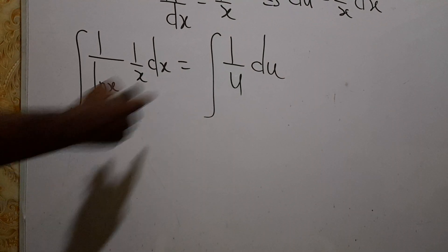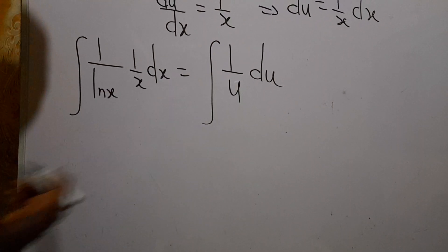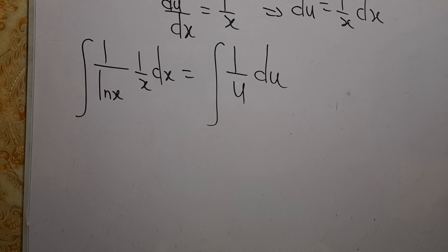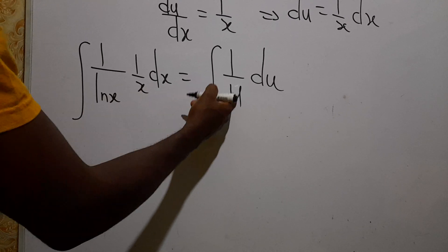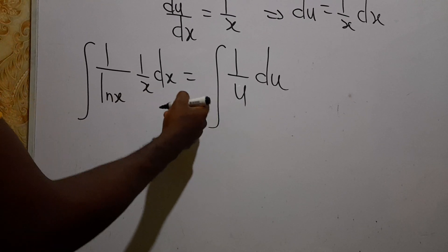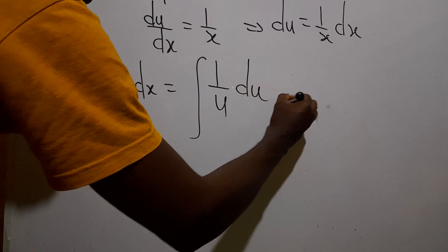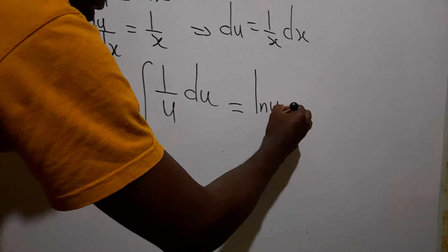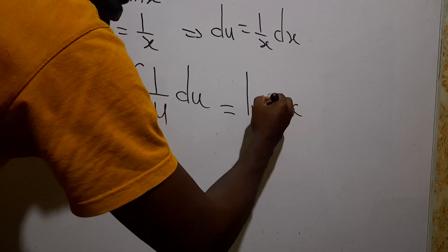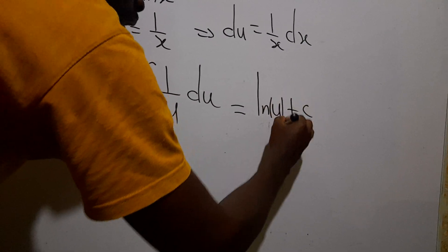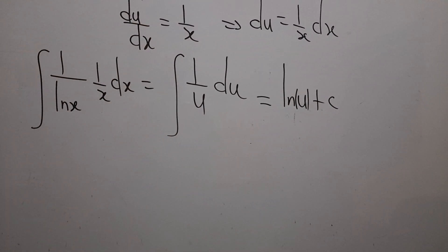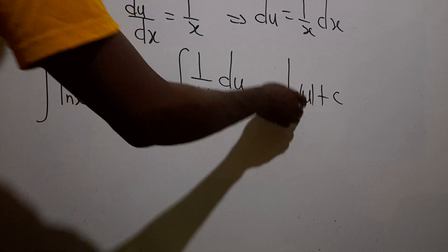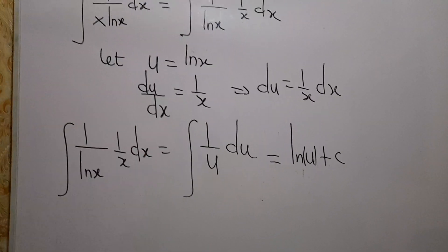The integral of 1 over u is simply ln|u| — remember the absolute value. So the integral evaluates to ln|u| plus the constant of integration.